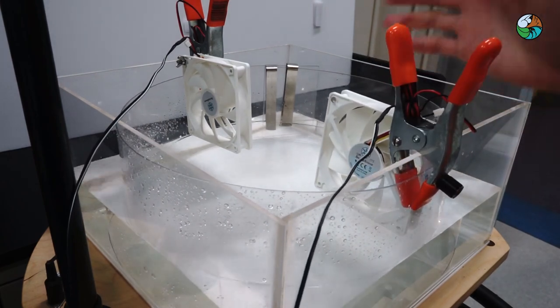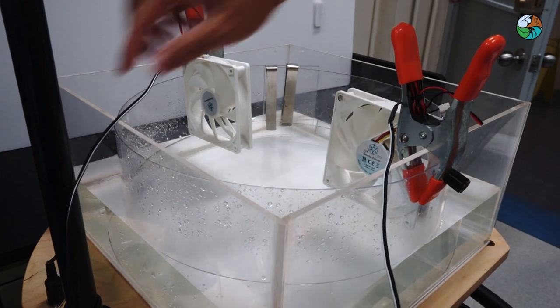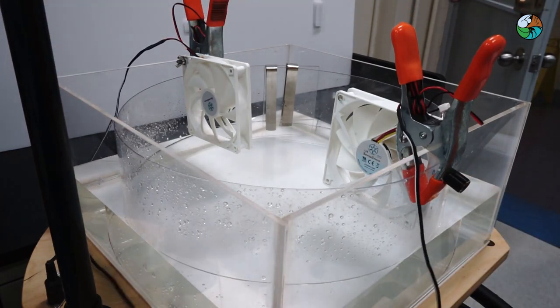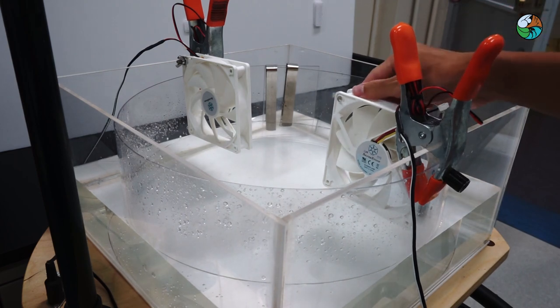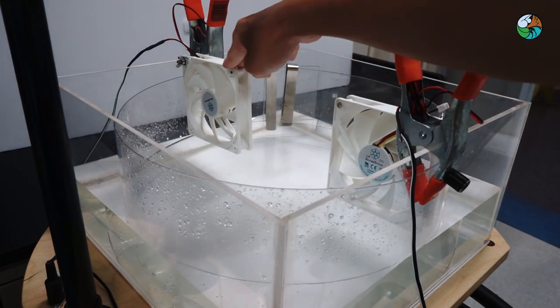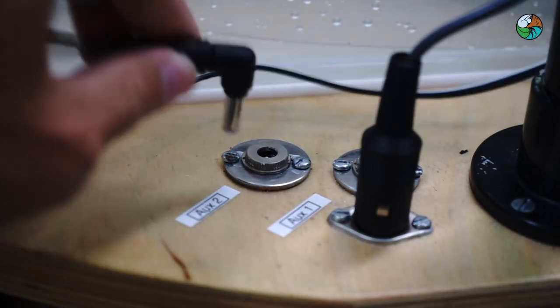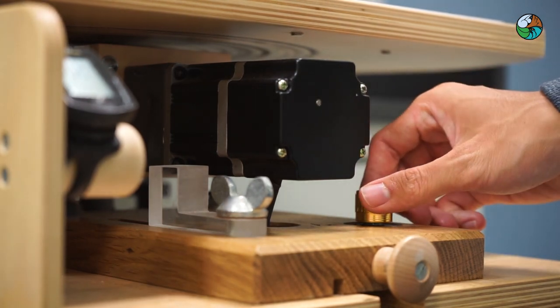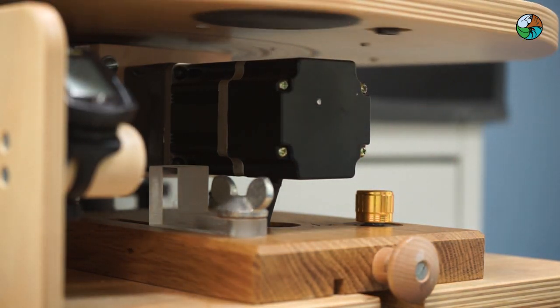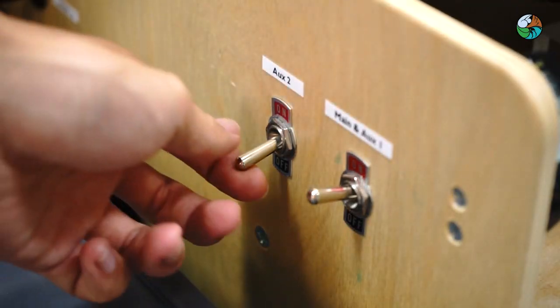I am doing the cyclonic flow first. Be careful with the wires. The fans should blow just above the water surface. Set the tank into rotation, a speed of about 10 revolutions per minute. Turn on the fans.